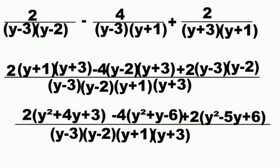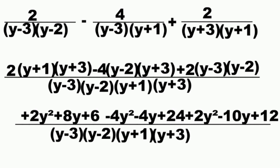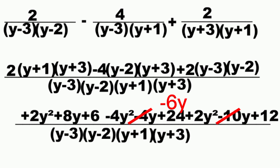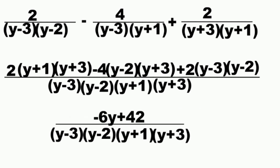Multiplying 2 to (y squared plus 4y plus 3) gives 2y squared plus 8y plus 6. Multiplying minus 4 to (y squared plus y minus 6) gives minus 4y squared minus 4y plus 24. Multiplying 2 to (y squared minus 5y plus 6) gives 2y squared minus 10y plus 12. Combining: 2y squared minus 4y squared plus 2y squared equals 0. Then 8y minus 4y minus 10y equals minus 6y. And 6 plus 24 plus 12 equals 42. So the final answer is (negative 6y plus 42) over (y minus 3)(y minus 2)(y plus 1)(y plus 3).